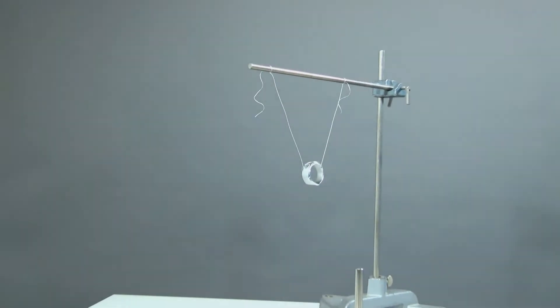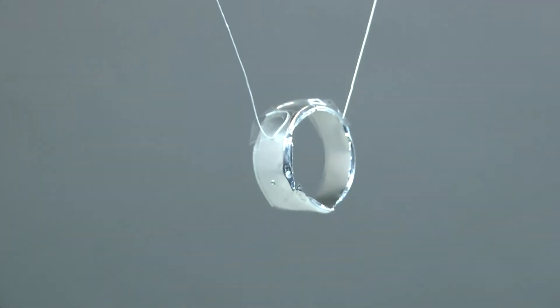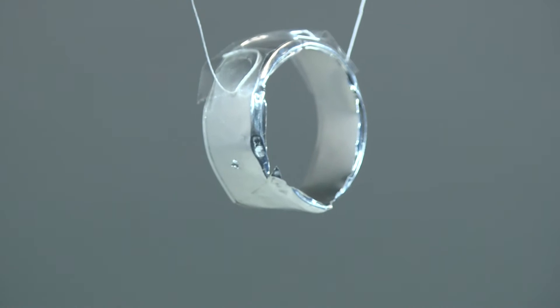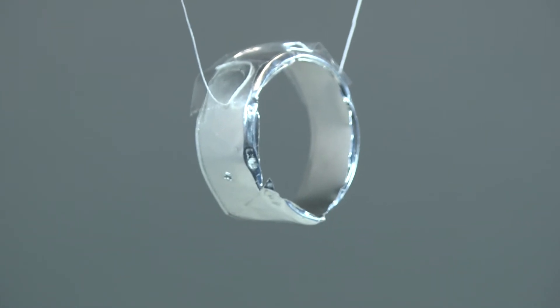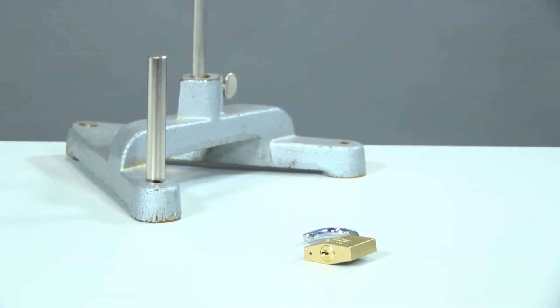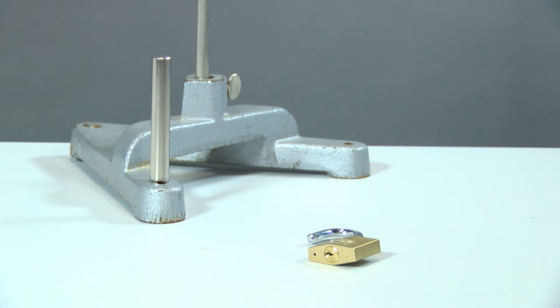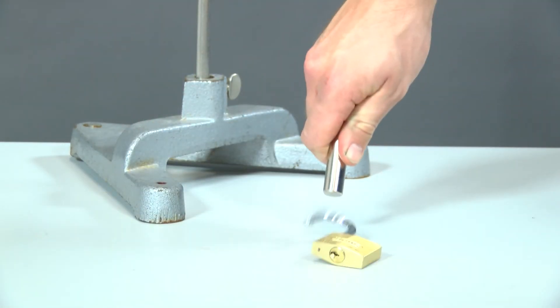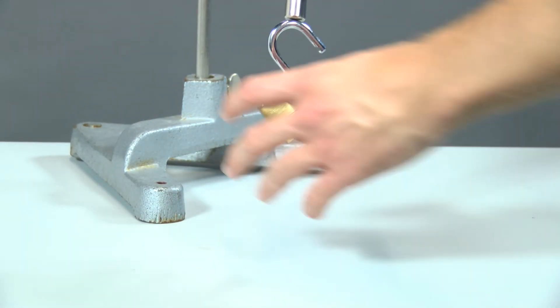I'll show you another experiment. For this experiment I cut out the bottom of a tea-light so that only an aluminum ring remained. I attach this ring to a tripod rod with two threads and a little sticky tape. I also need a permanent magnet.